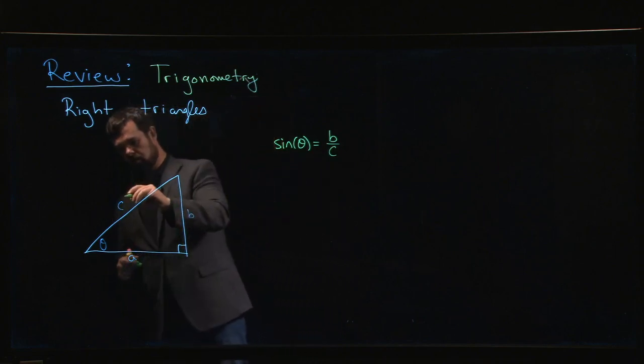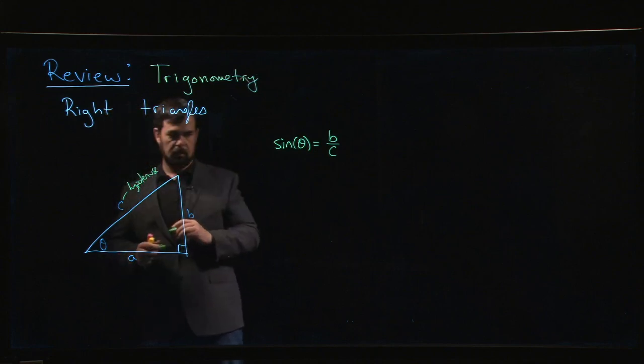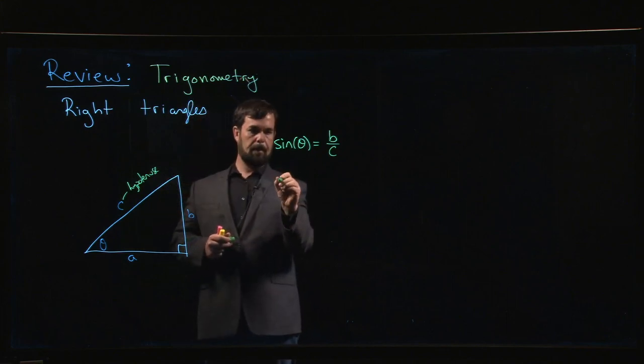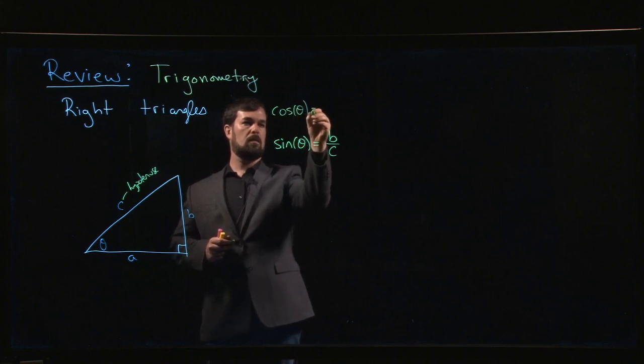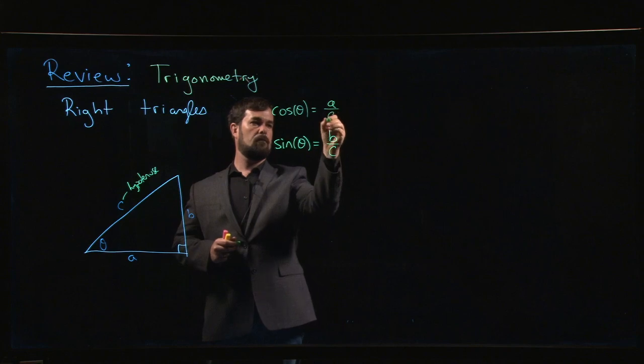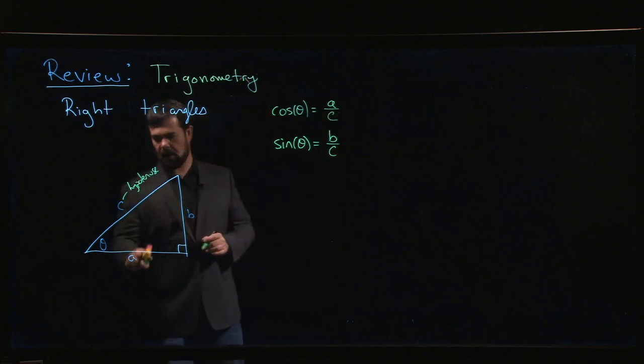So this C is your hypotenuse. Cosine is the adjacent side, A, over the hypotenuse. So it's the ratio A over C.